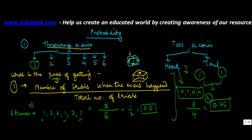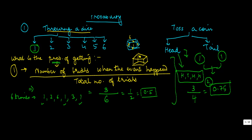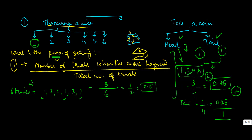Now please note that in any given situation, the sum of probabilities is always one. So when you toss a coin, there could be two outcomes: head and tail. The probability of tail is one divided by four, which is 0.25. If you add these two — 0.75 plus 0.25 — you will get one.